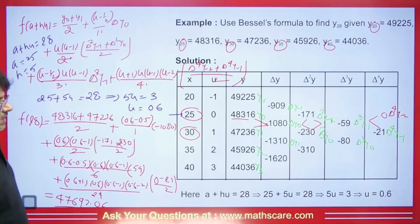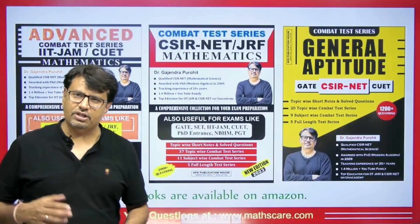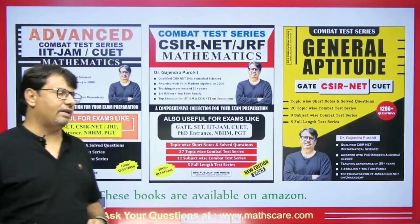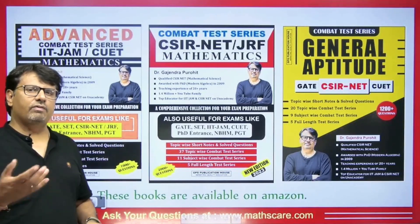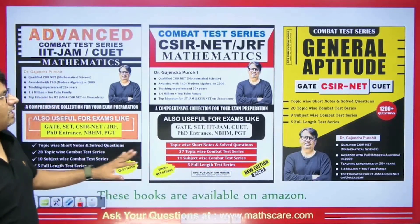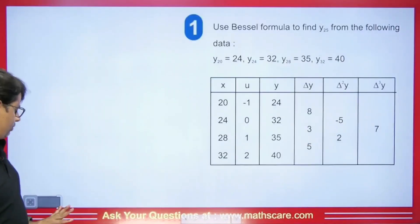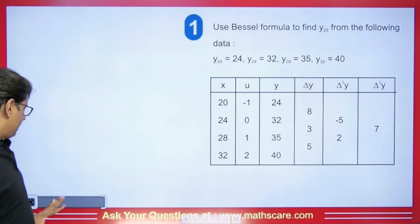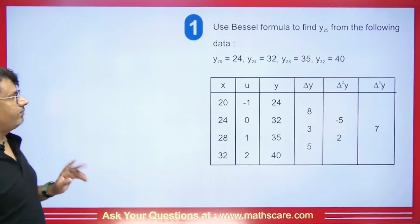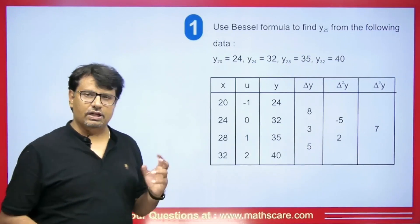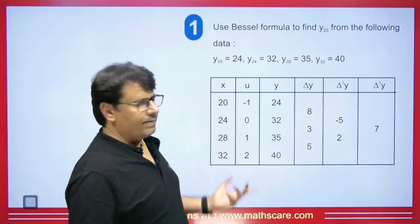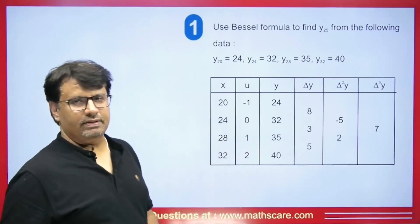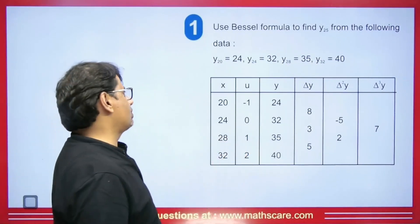If you are preparing for CSIR Net, Gate, or IIT JAM, our books are available on Amazon and Flipkart, so you can buy them there. I had taught you how to do these questions using Sterling as well — if you have watched my Sterling video. Now similarly I am trying to solve it using the Bessel formula.